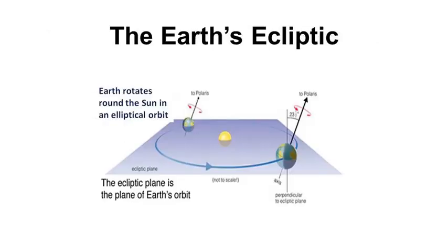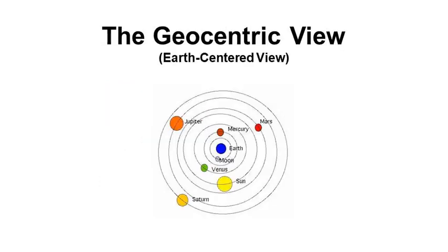The Earth's ecliptic is an imaginary plane on which the Earth, the Moon, the planets, and the zodiac constellations orbit around the Sun. The ecliptic coordinate system is a geocentric, that is Earth-centered, view of the celestial sphere.